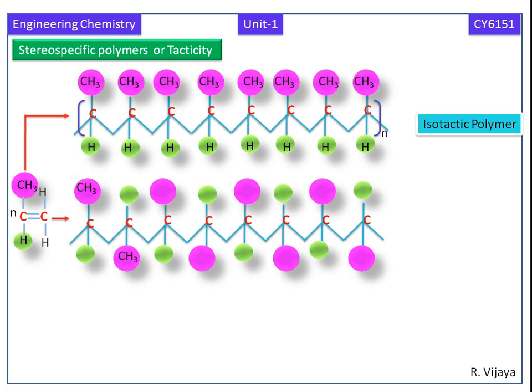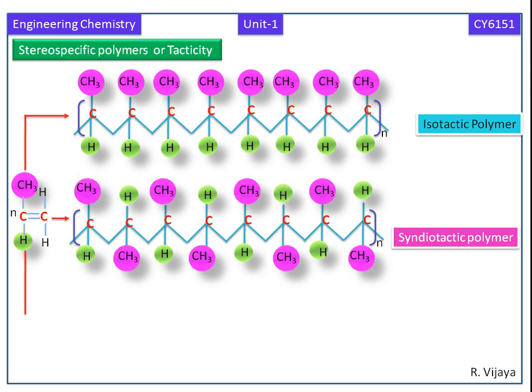Here we can see how the methyl groups are arranged in an alternating fashion and the hydrogens are also arranged in an alternating fashion. Here the arrangement is in regular manner. This type of polymer is called syndiotactic polymer.